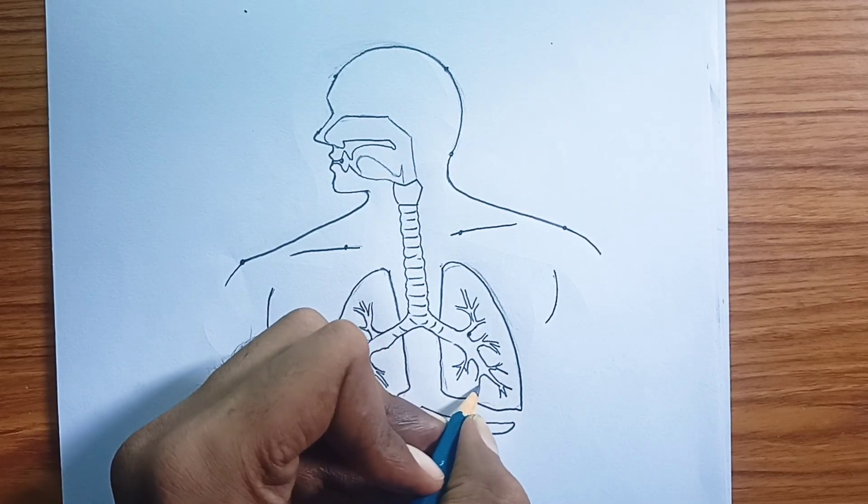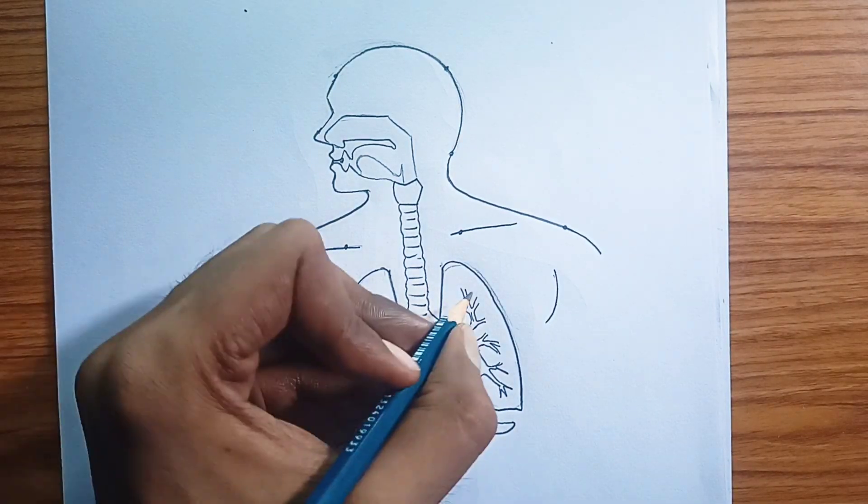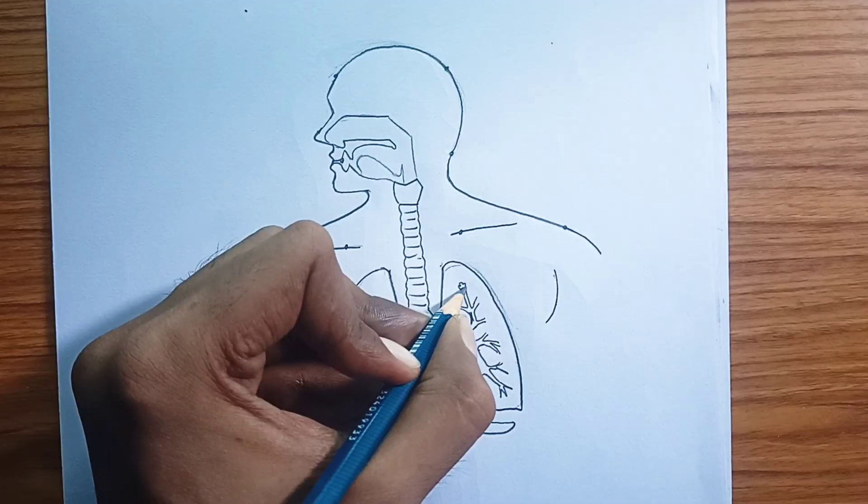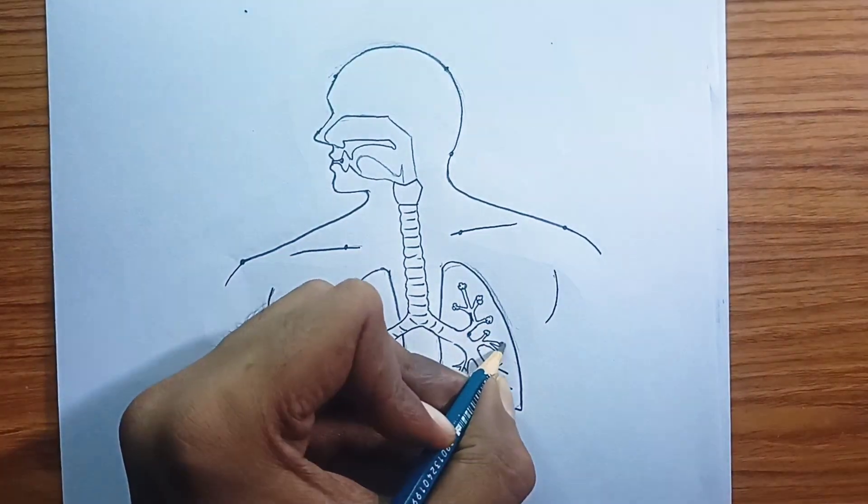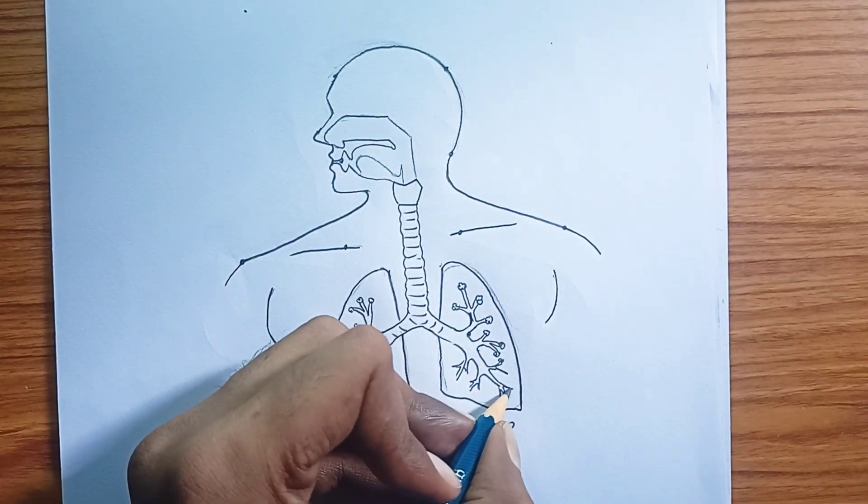Oxygen from the inhaled air diffuses across the thin walls of the alveoli into the blood in the capillaries. At the same time, carbon dioxide from the blood diffuses into the alveoli to be exhaled.